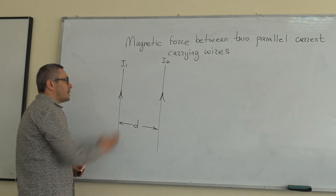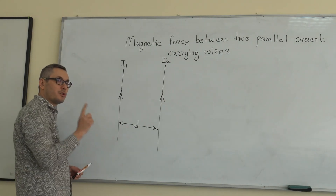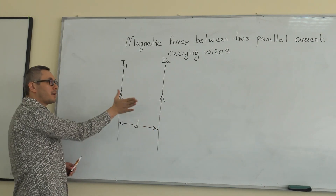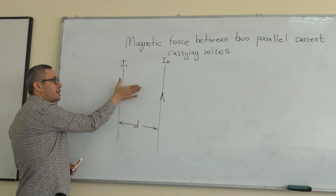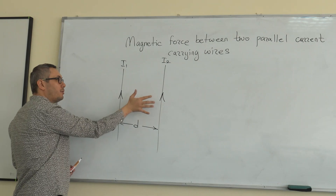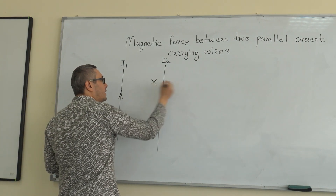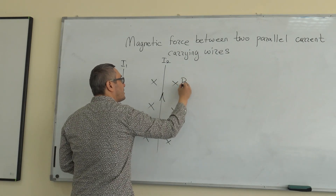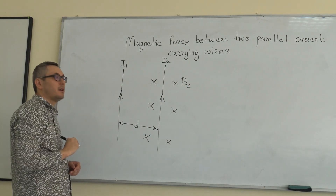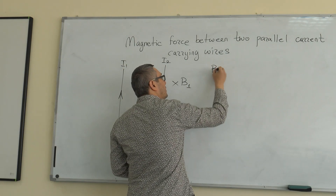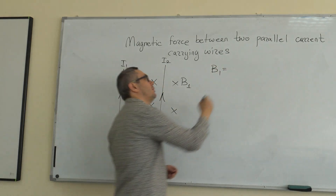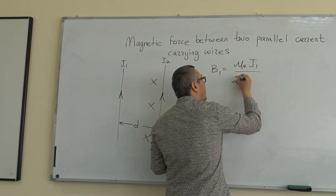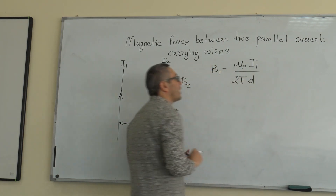Let's look at the first current and find out the direction of the magnetic field it creates at the position of the second one. Using the right-hand rule, we point the thumb in the direction of the current — the magnetic field is pointing into the board. So the magnetic field created by the first current is pointing into the board. Let's label this B1. The magnitude of B1 is equal to mu-zero times I1 over 2 pi D, where D is the distance to the second current.